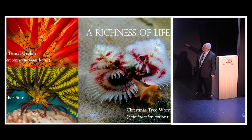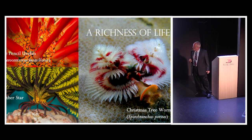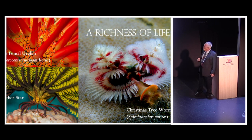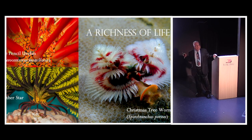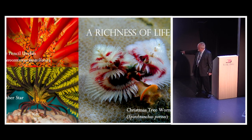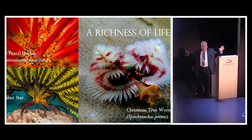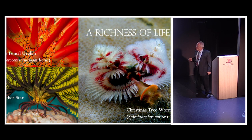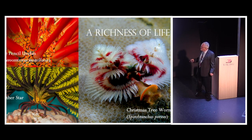Most often people say the most beautiful animals on the reef are Christmas tree worms, or feather worms, or peacock worms. What you're seeing there are the gills of the worm — the main body is down inside the coral — and it extends these gills out to breathe and possibly trap microorganisms for food. If you go near them and they get upset, they just pull them all in out of sight.